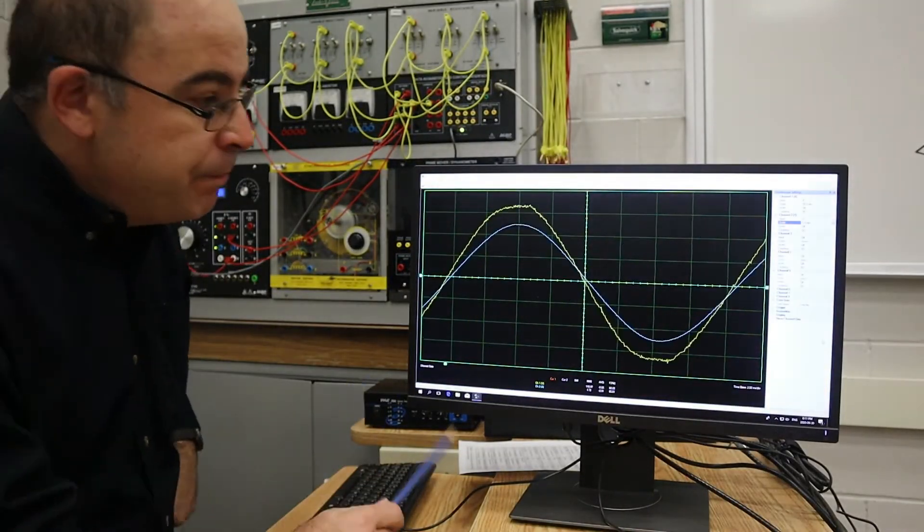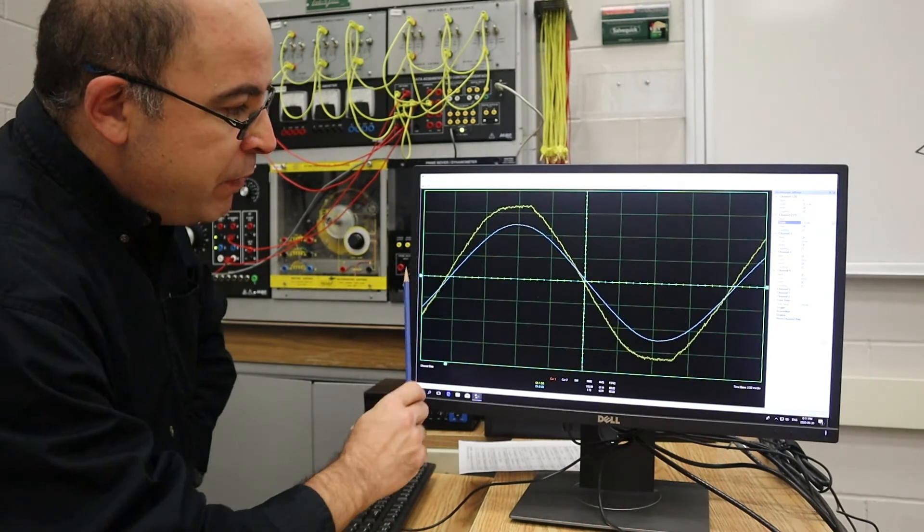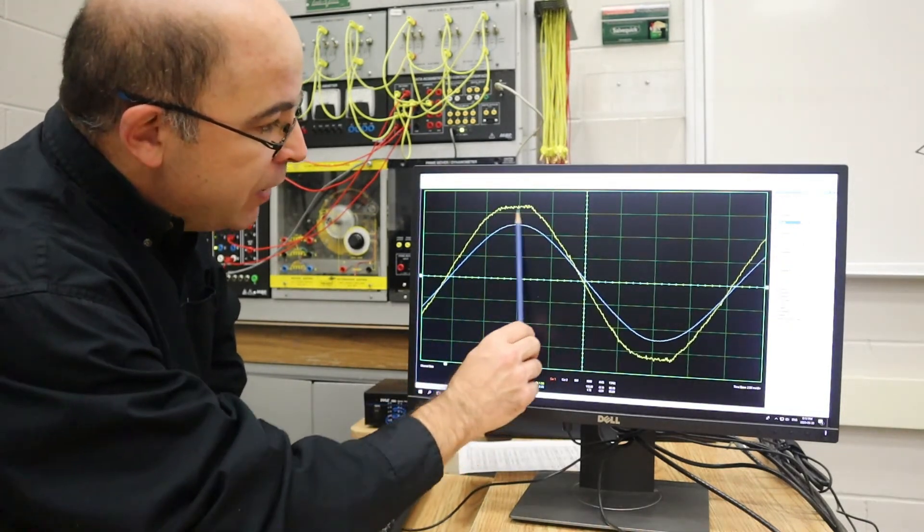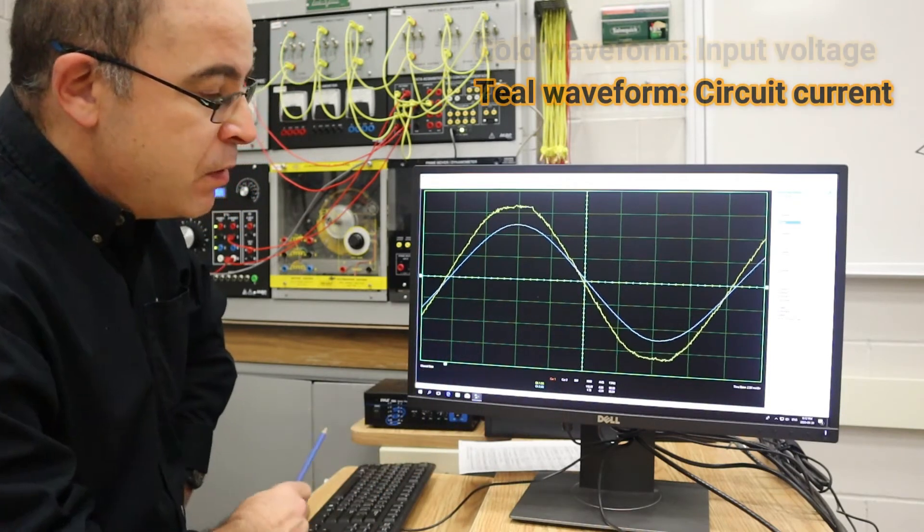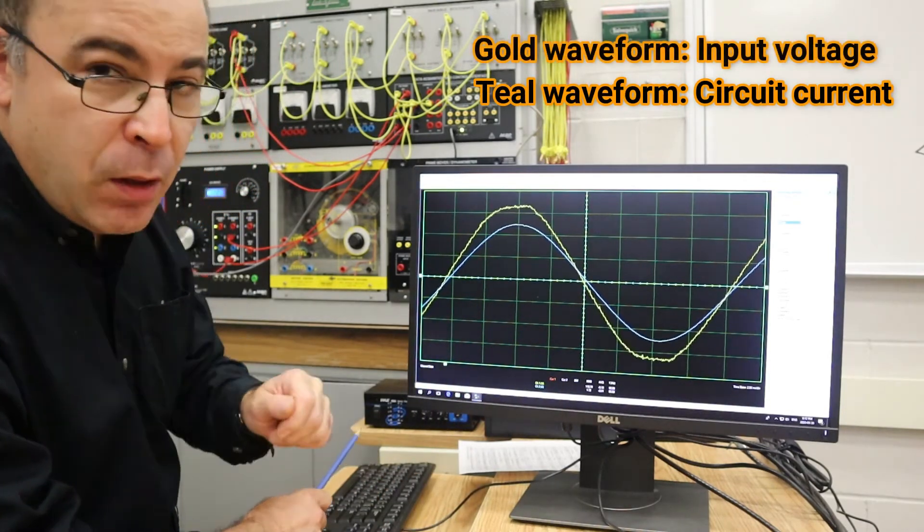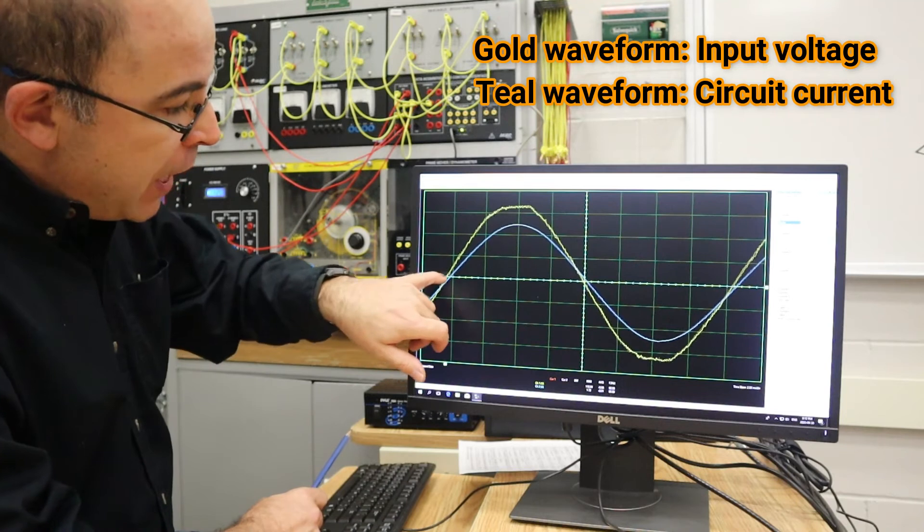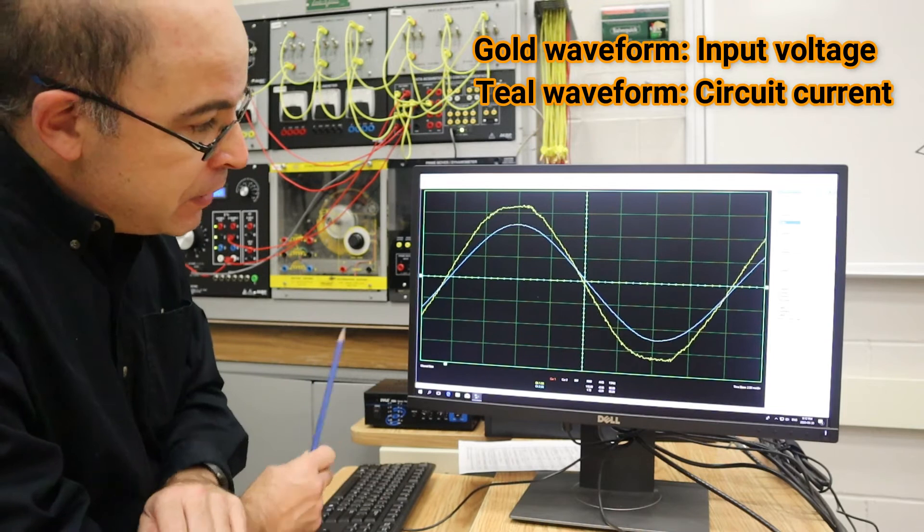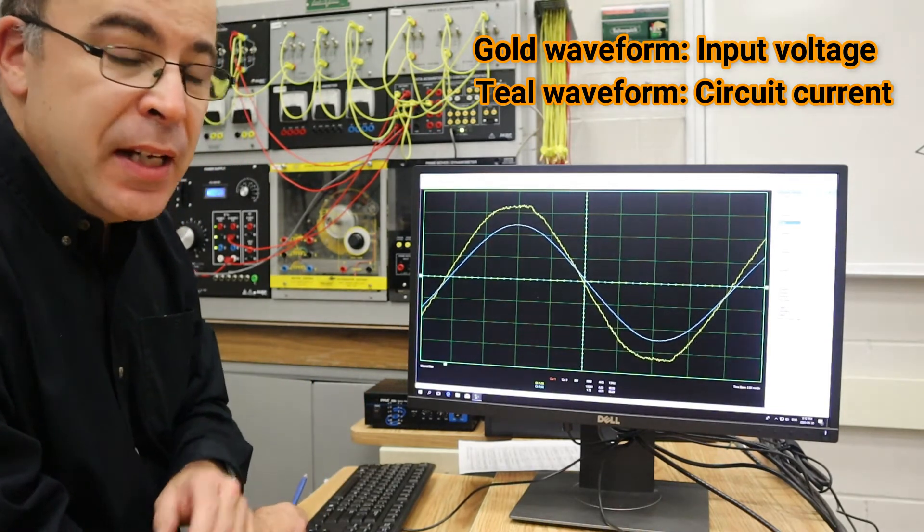So here I am. I've got the two waveforms. Teal blue represents current, and this bright yellow one, or gold, represents the input voltage. Now, have a look at the voltage and current relationship when I start to take resistance out of the circuit and see if that affects anything.